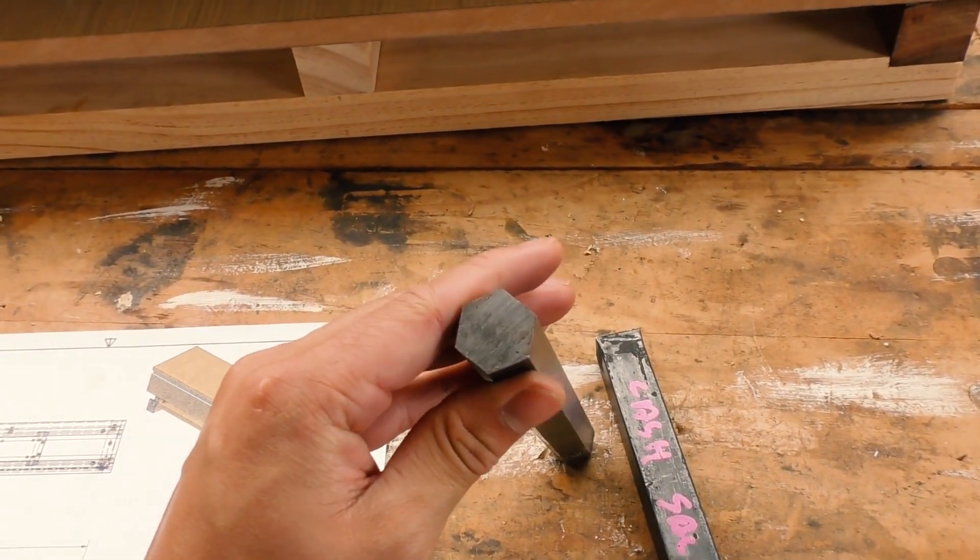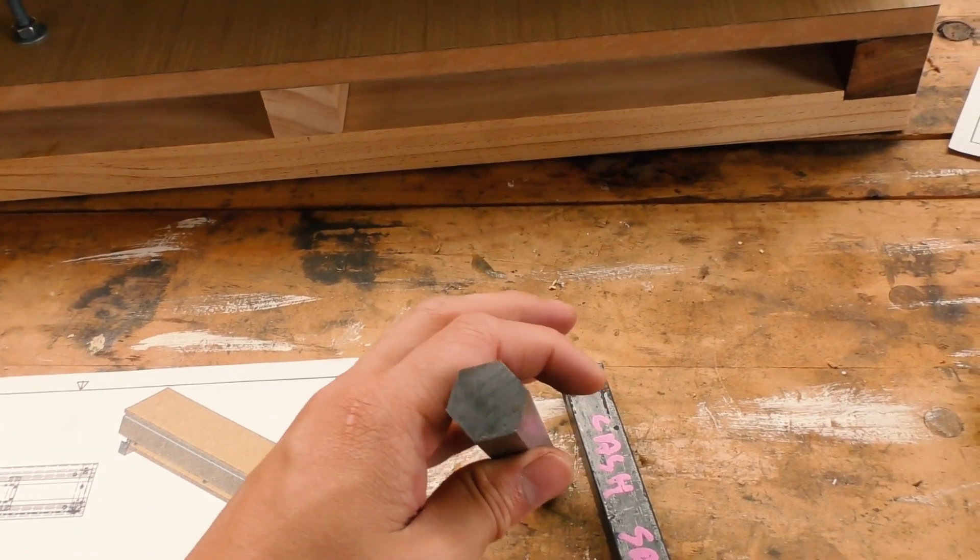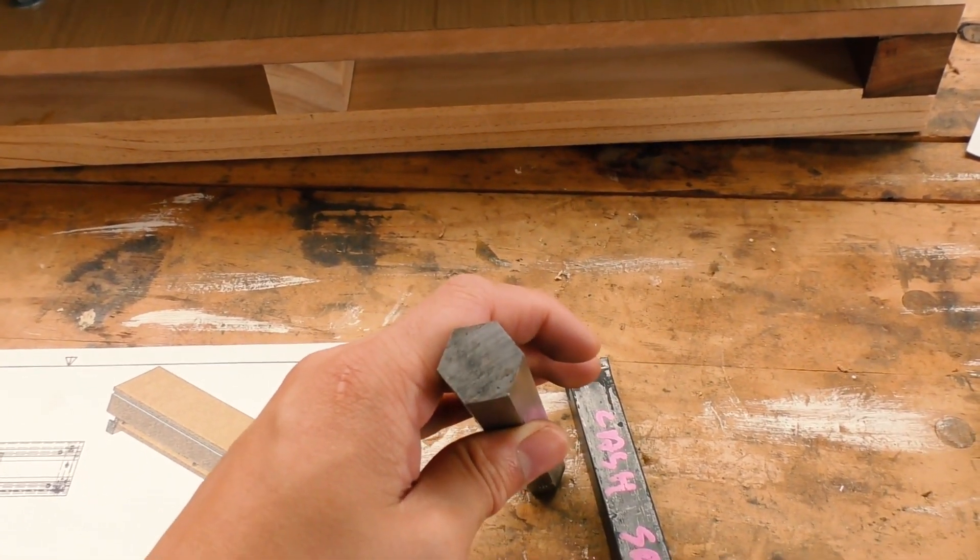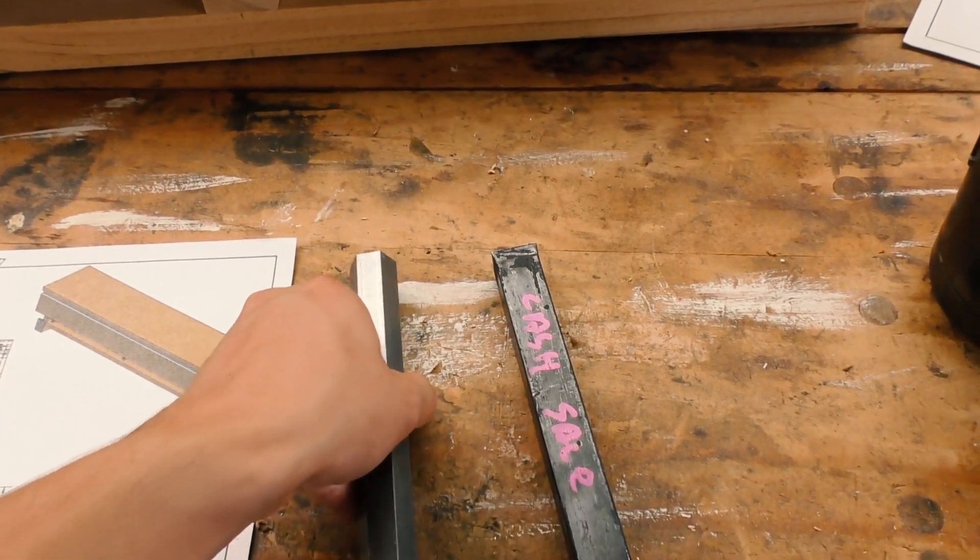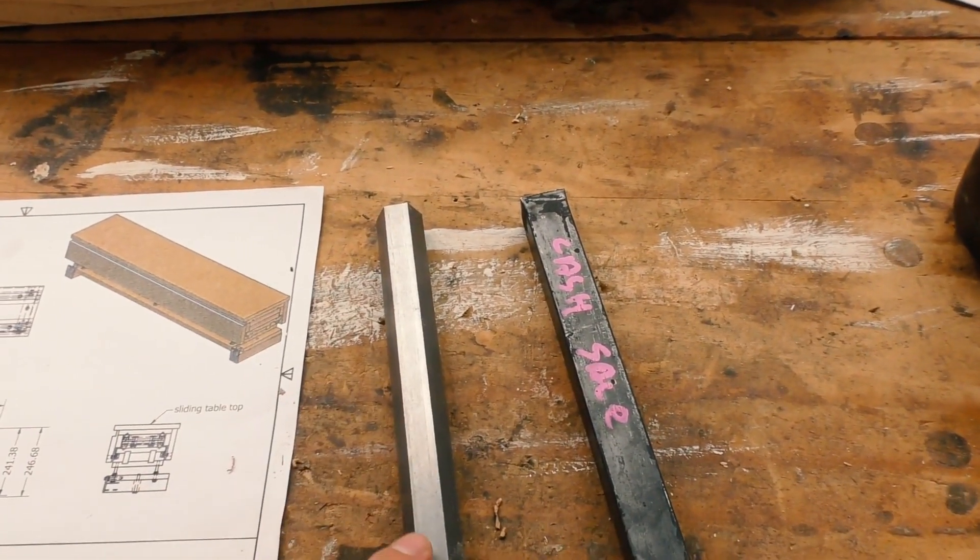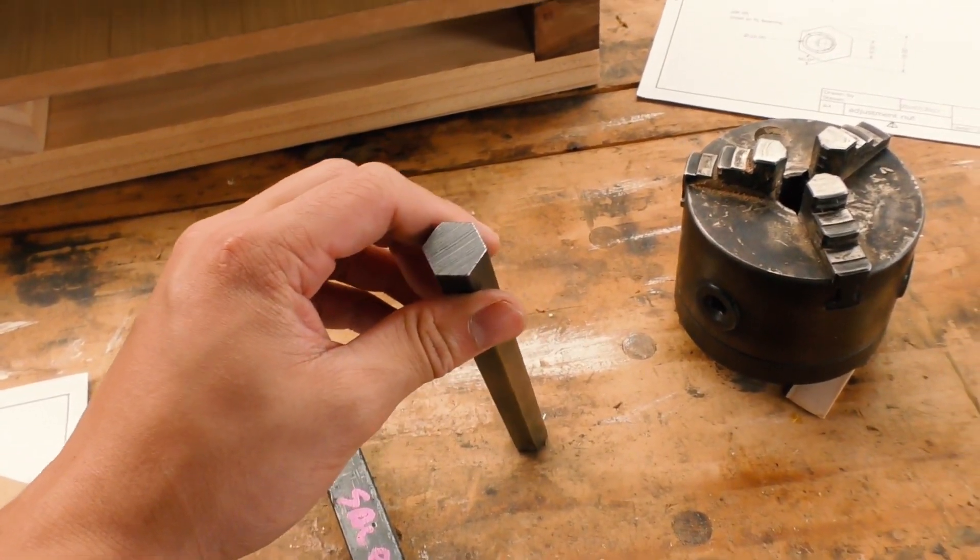But luckily, while I was buying new blanks for the axles because I messed up, I found out the local steel yard actually had steel that were already in hexagonal shape. That would save me from having to mill out the hexagons, and instead I'll be able to focus more on the turning. Unfortunately I bought the wrong dimensions on my first try because I didn't check, so I had to go back a second time.